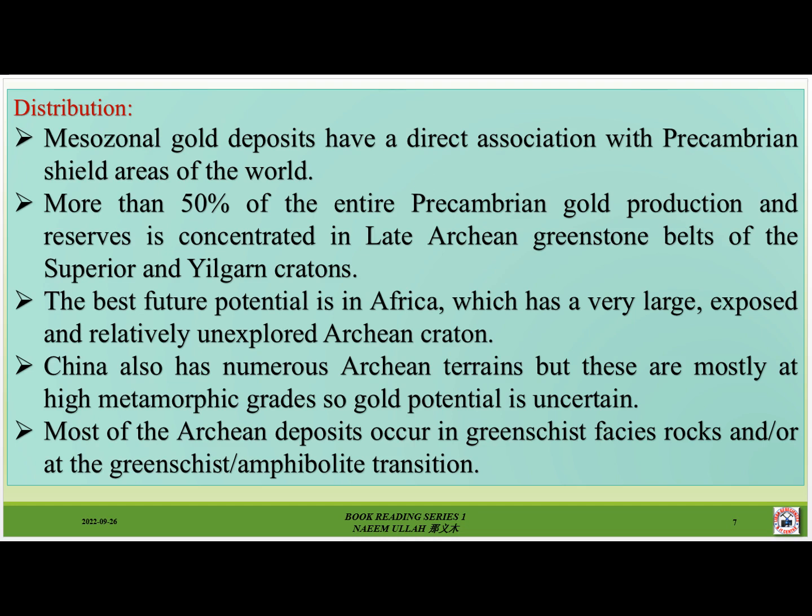Mesozonal gold deposits have a direct association with Precambrian shield areas of the world. More than 50 percent of the entire Precambrian gold production and reserves is concentrated in late Archean greenstone belts of the Superior and Yilgarn Cratons. The best future potential is in Africa, which has a very large exposed and relatively unexplored Archean craton. China also has numerous Archean terrains, but these are mostly at high metamorphic grades so gold potential is uncertain. Most of the Archean deposits occur in greenschist facies rocks and are at the greenschist-amphibolite transition.